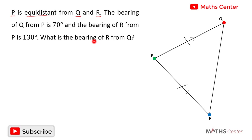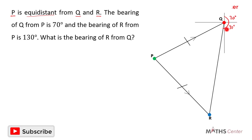The question wants us to find the bearing of R from KL, which is given by a particular angle. We know that from the north line to east is 90 degrees, and from north to south is another 90 degrees. So to get the bearing of R from KL, we need to find the small angle formed there so we can add it to 90 degrees and 90 degrees.